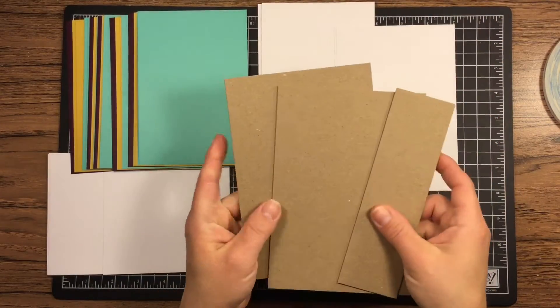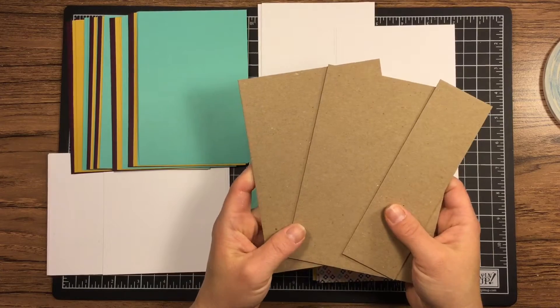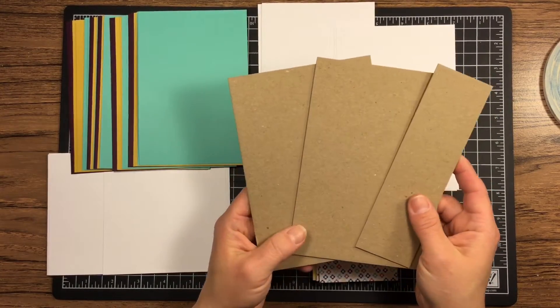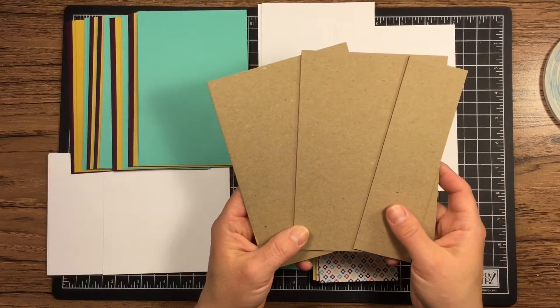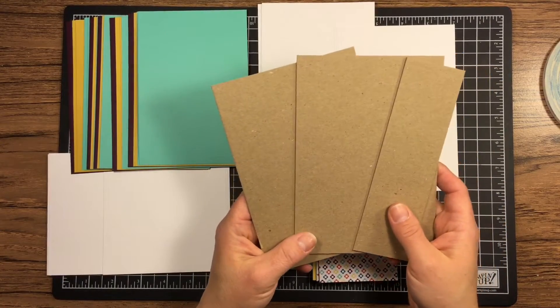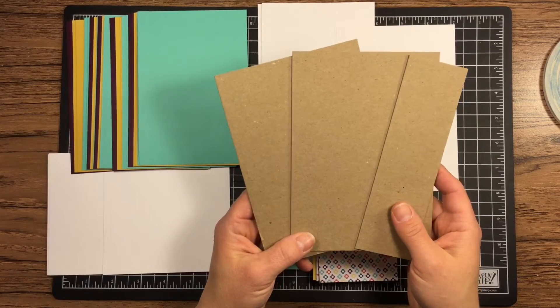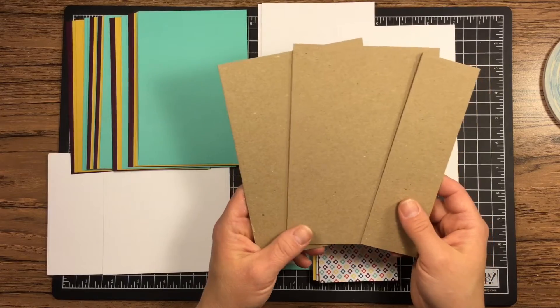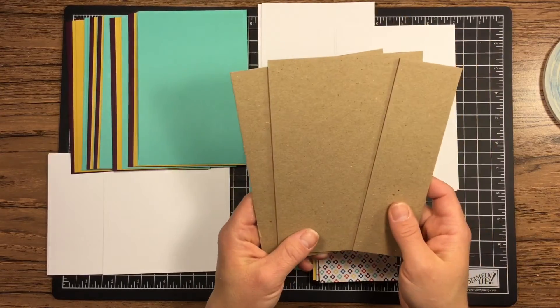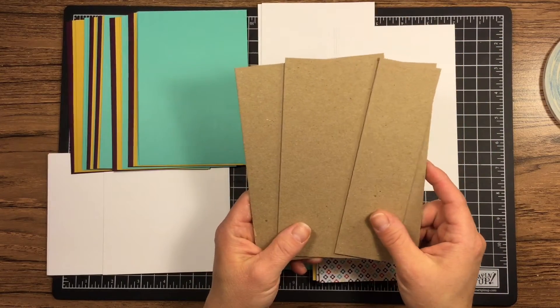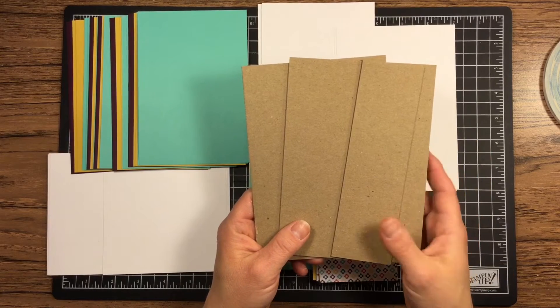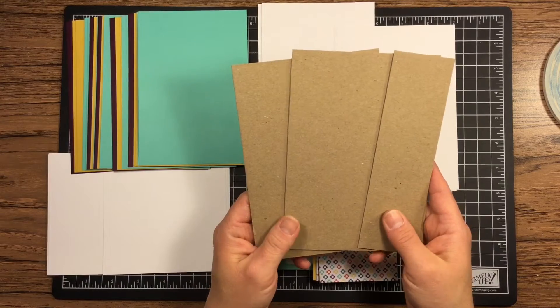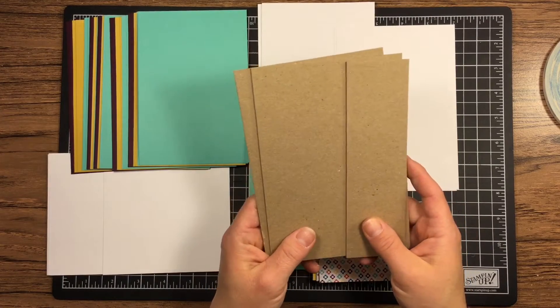You'll need some chipboard. I like to save the chipboard from our specialty designer paper. If you don't have any of that, you can purchase craft chipboard off of Amazon in 12x12 sheets. And you only need one sheet. You actually don't even use a whole 12x12 chipboard piece in order to make this album. And all the sizes of all of these, rather than me trying to remember and accidentally giving the wrong size, I will put all the sizes in the description box and also on my blog when this video is uploaded.